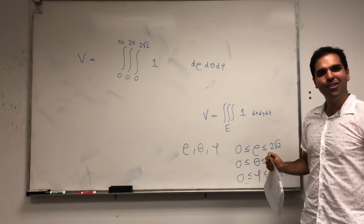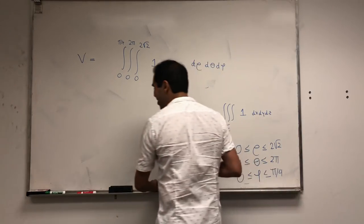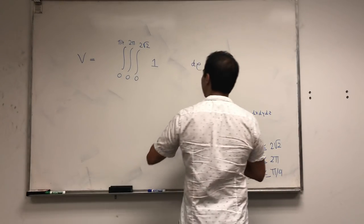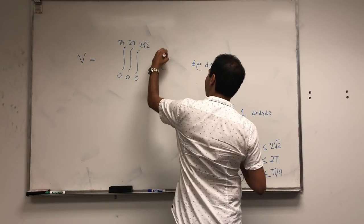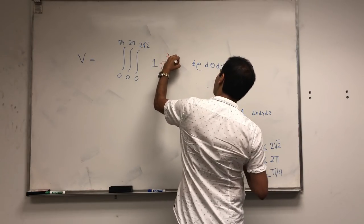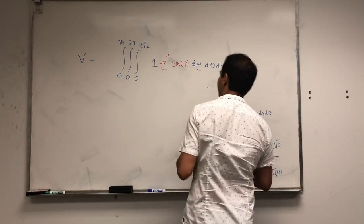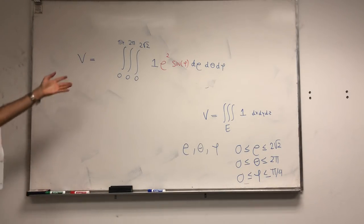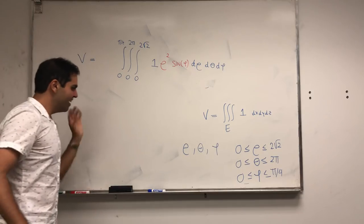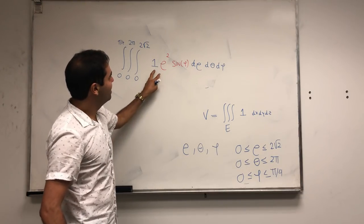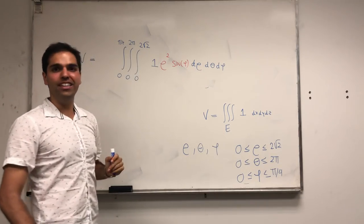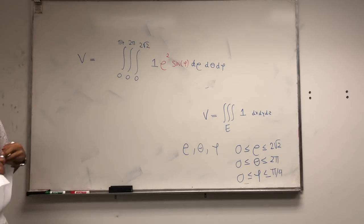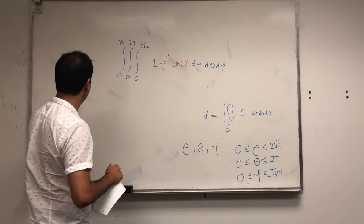And remember, before in polar coordinates we had r dr d theta. In this case we need this weird thing, rho squared sine of phi. So that's like the junk we get from using the Jacobian. And here's the nice thing: this triple integral actually separates out into three simpler integrals.